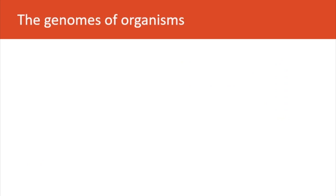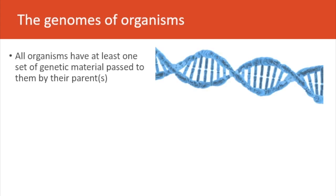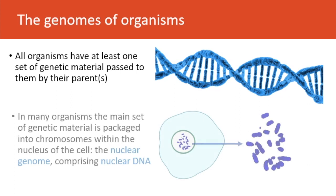Two or more kinds of genome of organisms act as sources of genetic markers. All organisms have at least one set of genetic material passed to them by their parents. In many organisms, the main set of genetic material is packaged into chromosomes residing within the nucleus of the cell — this is the nuclear genome, comprising nuclear DNA.